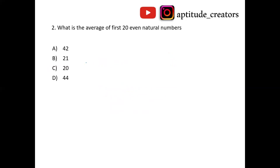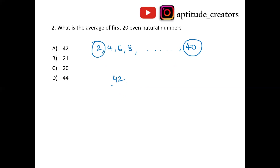What is the average of the first 20 even natural numbers? Even natural numbers: 2, 4, 6, 8... and the last number when we expect 20 numbers. First number plus last number divided by two gives 2 plus 40 divided by 2, which is 42 divided by 2 = 21. Answer is option B, 21.